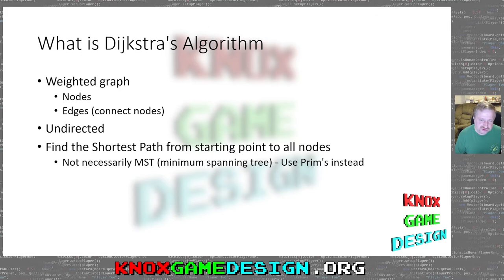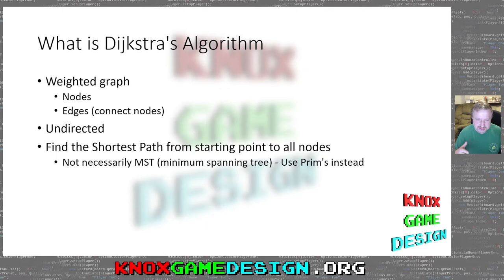When we use Dijkstra's Algorithm, most of the time we're thinking about a weighted graph, where each edge has a value. That may not necessarily be distance — if you're looking at a traffic map, some lanes may be slower. In a game, there may be obstacles or things that slow you down through a certain path, giving that edge a greater value. In most cases it may just be the distance between the nodes.